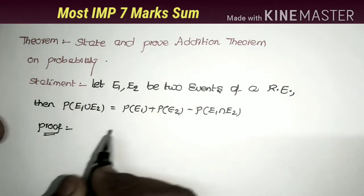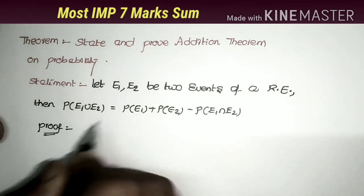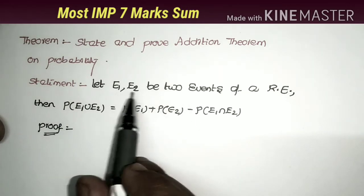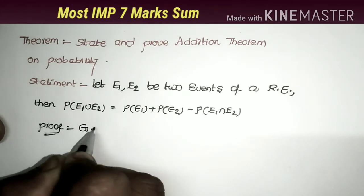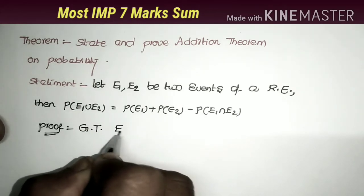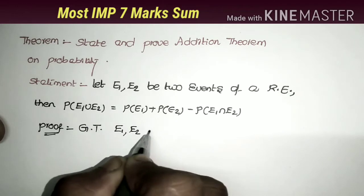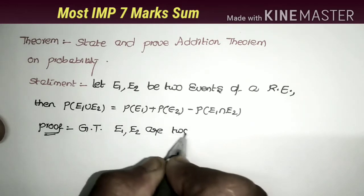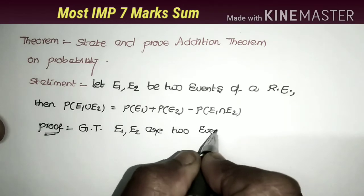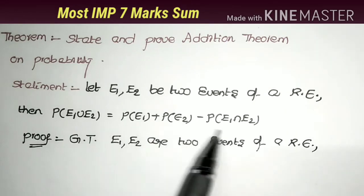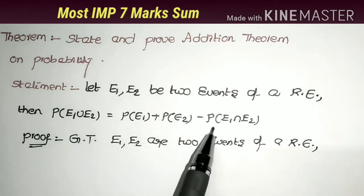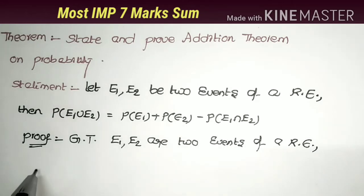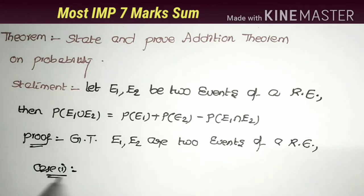For the proof, first I write the given data. Given that E1 and E2 are two events of a random experiment. Now what we have to show is that P(E1 ∪ E2) = P(E1) + P(E2) - P(E1 ∩ E2). We prove this theorem in two cases.